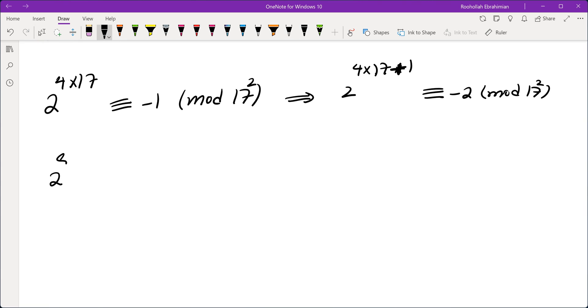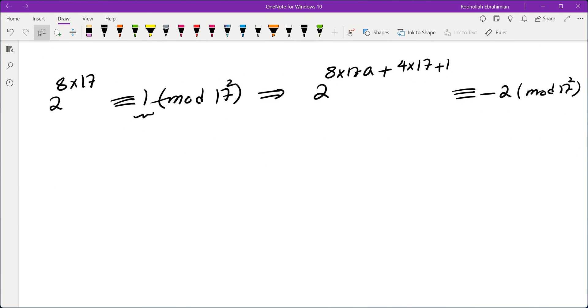Bottom line is this. Because we know 2 to the power of 8 times 17 is 1 mod 17 squared. So that means if I do 2 to the power of 8 times 17 times any integer plus 4 times 17 plus 1, that would give me negative 2 mod 17 squared. Because it's basically taking negative 2 and multiplying it by a power of 1.